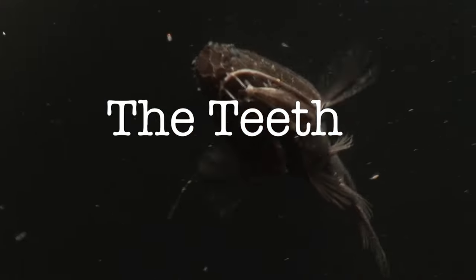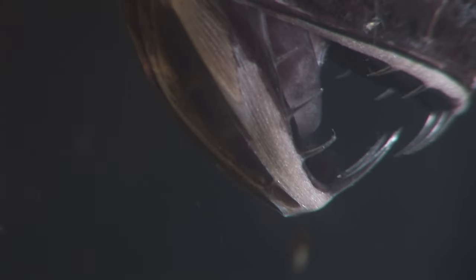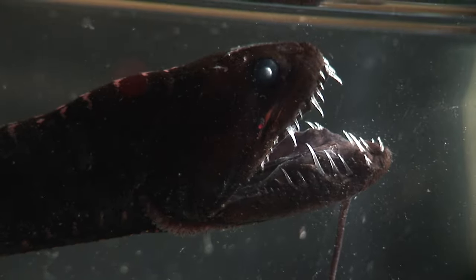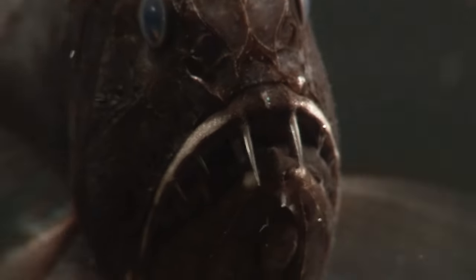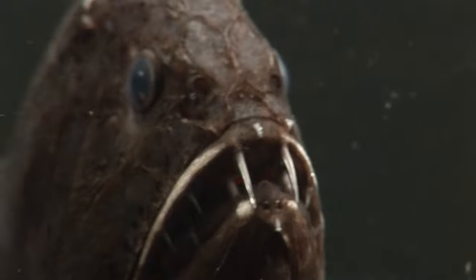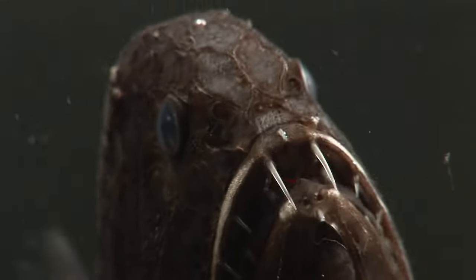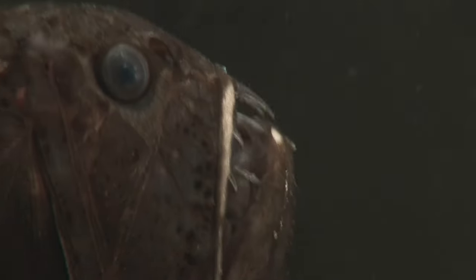The teeth. You can't help noticing they've got very big teeth, some of the largest ever compared to body size in the whole ocean. They're so big that the fangtooth has slots in its upper jaw to take the biggest fangs of the lower jaw, so it doesn't pierce its own brain when it shuts its mouth.